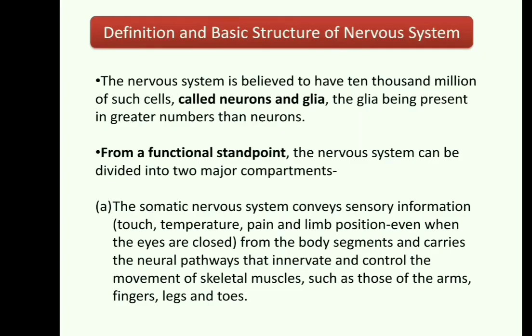The basic function of the nervous system is to gather information from inside and outside the body with the help of sensory neurons, and transmit that information to the processing areas of the brain and spinal cord. The processing of this information in the brain and spine is an integral function. The nervous system is believed to have 10,000 million such cells, called neurons and glia, with glia being present in greater numbers than neurons.